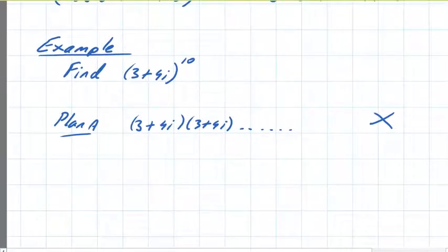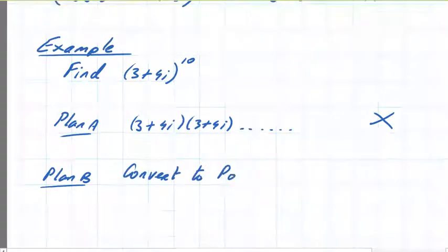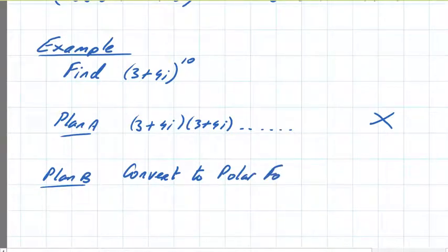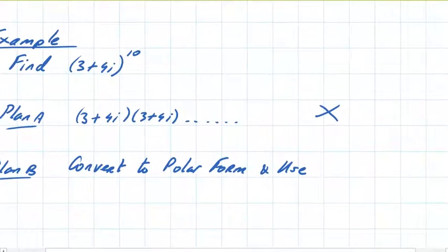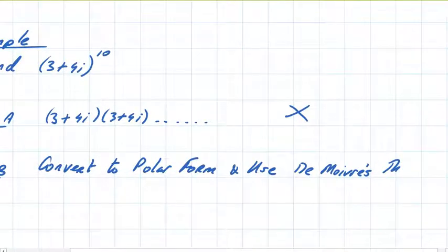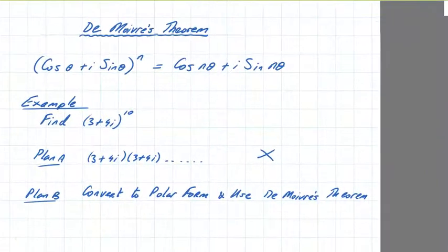Now, here's Plan B. Plan B, if we convert to the polar form and use De Moivre's Theorem. De Moivre's Theorem, the idea is the power disappears.